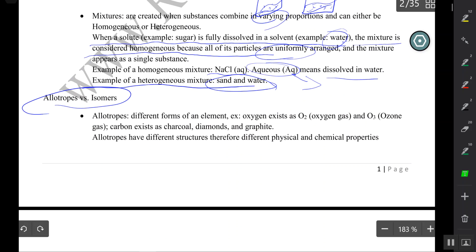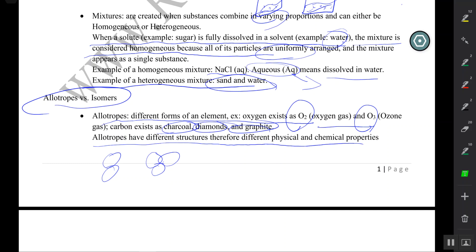Allotropes versus isomers. The element oxygen can exist as a diatomic element, and it can also exist as a triatomic element. O2 (oxygen gas) and O3 (ozone) are considered allotropes. Yes, they both are made of oxygen, but they have different properties.